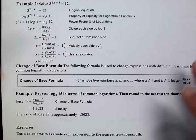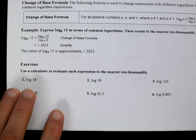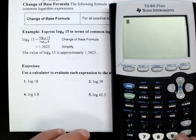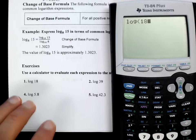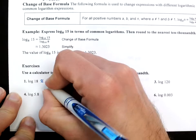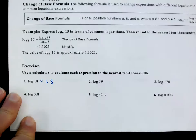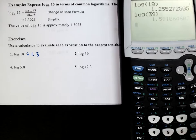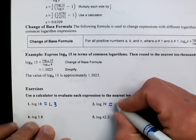The first thing we're going to do is use the calculator to evaluate the first few. There is a log key on your calculator right by the 7. So log of 18 gives us 1.255, and rounding to the nearest tenth, that's approximately 1.3. On number 2, same idea — press the log key beside the 7, tap in 39, and that gives us approximately 1.6.